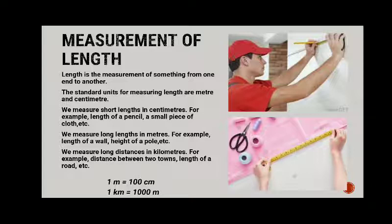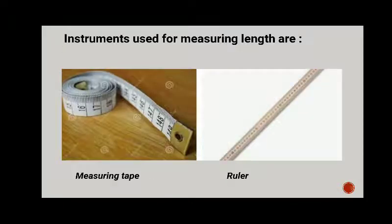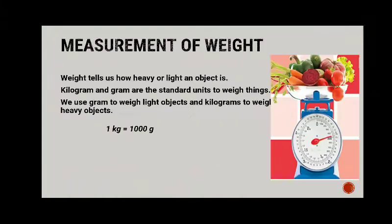We measure long lengths in meters — for example, the length of a wall or the height of a pole. We measure long distances in kilometers — for example, the distance between two towns or the length of a road. One meter equals one hundred centimeters, and one kilometer equals one thousand meters. Instruments commonly used for measuring length are the measuring tape and ruler.